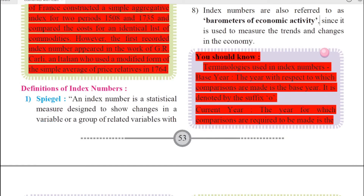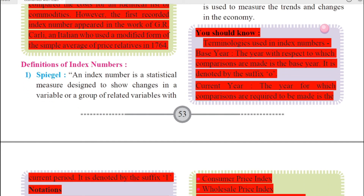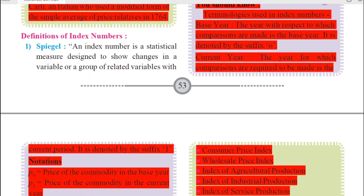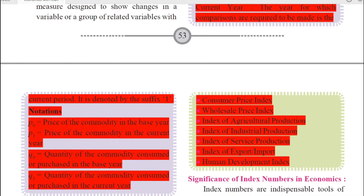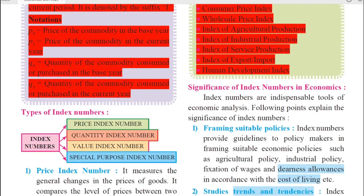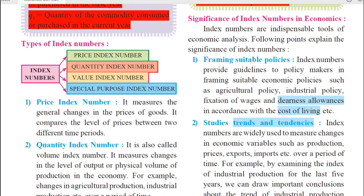There is one more activity box which is omitted — this is about the terminologies used related to index numbers. Remember, for the base year the suffix is zero (0), and for the current year the suffix is one (1). This has been removed from your syllabus for this year due to the COVID-19 situation.